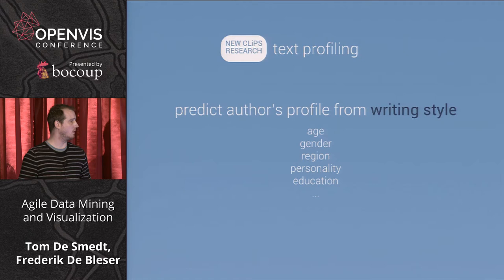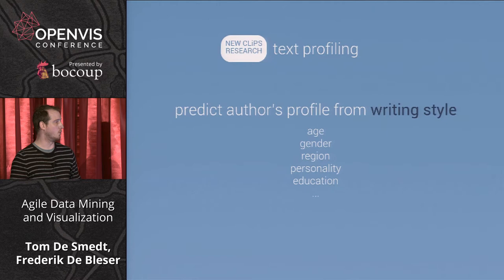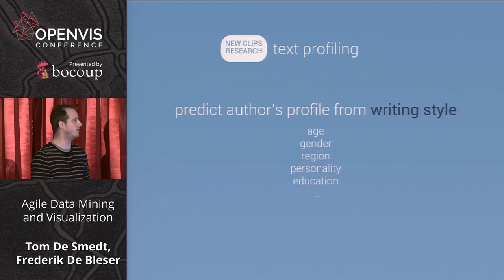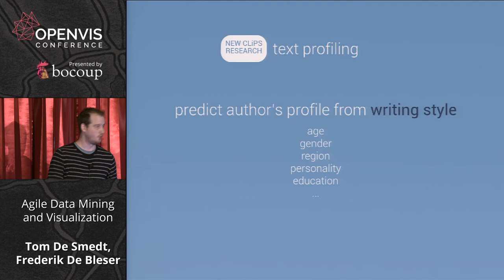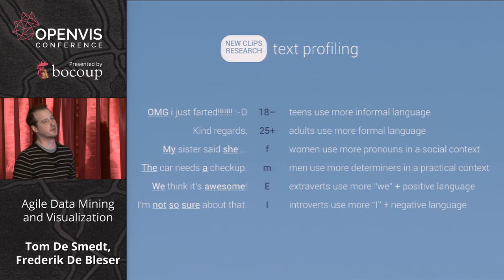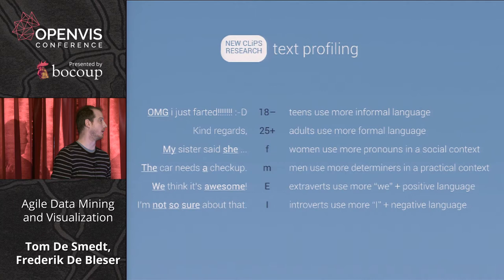Our current new research is text profiling. Text profiling tries to get information about the author — not what they're writing about, but based on how they write, you can derive information about age, gender, the region they live in, personality, and education. For example, teenagers are more inclined to use informal language — chat language, smileys, curses. Adults use more formal language. Women tend to use more pronouns — 'we,' 'she,' 'her,' 'my' — in a social context, talking about people.